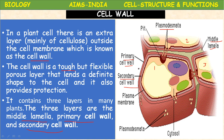The structure of the cell wall consists of three layers. The cell wall is present above the plasma membrane or cell membrane. The three layers are: primary cell wall, middle lamella, and secondary cell wall.